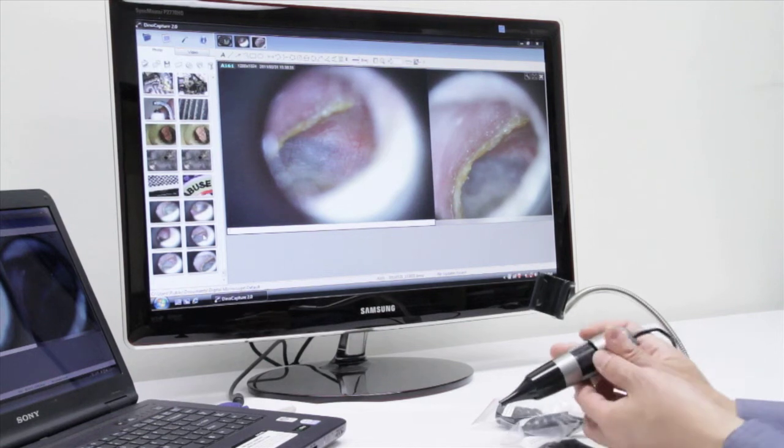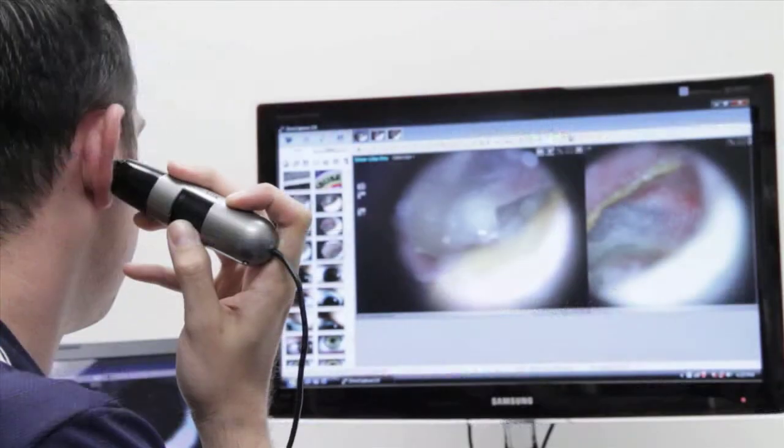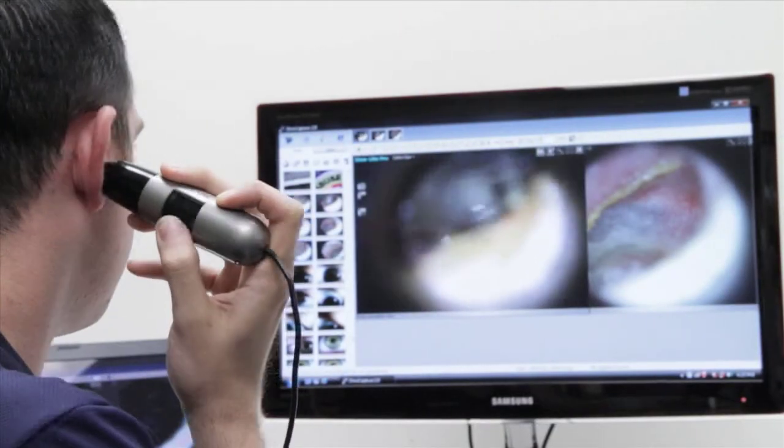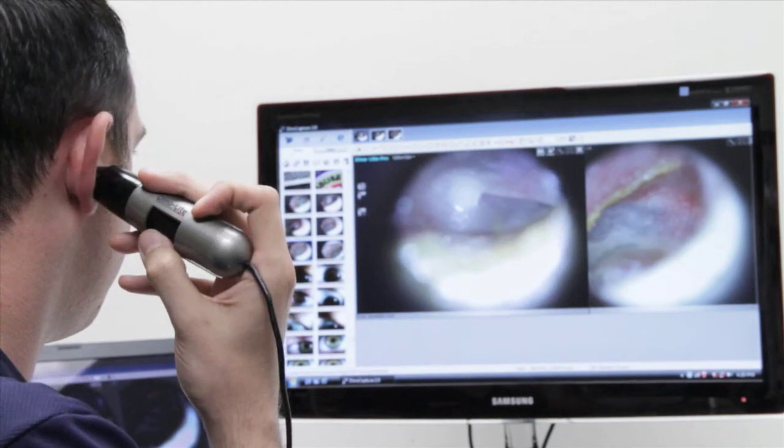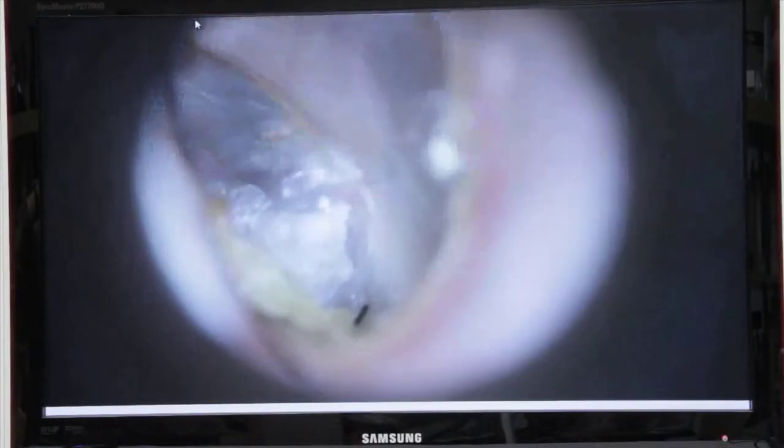You will also find a rotary dial on the side of the unit that adjusts the focus and magnification. The depth of field will allow you to focus on things a little closer or further away. The EUT V3 is very user friendly, making one-handed self examinations fast and easy.